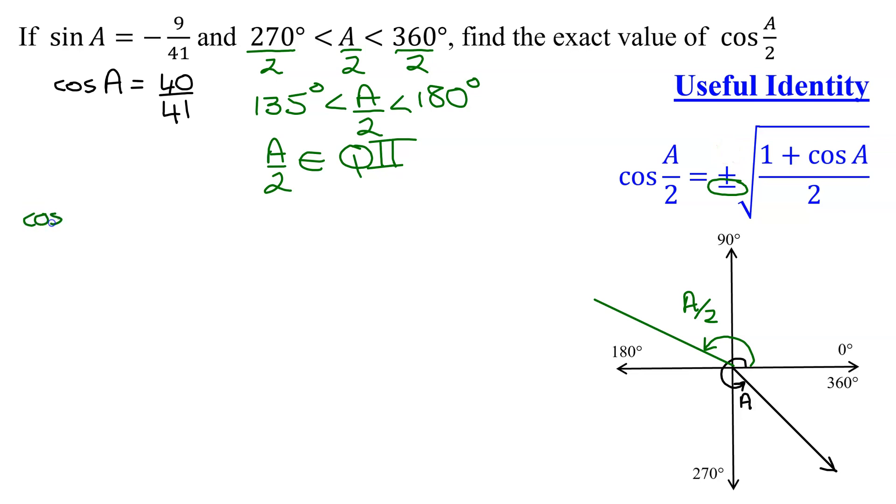I know that the cosine of my half angle, A over 2, is the negative square root of 1 plus cosine A, so it's 1 plus cosine A is 40 divided by 41, all divided by 2. So it's negative the square root of, to add fractions, common denominator, so 1, I can turn into 41 over 41, that is equivalent to 1, plus 40 over 41, all divided by 2.